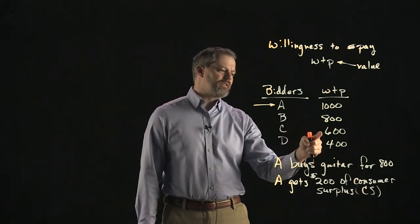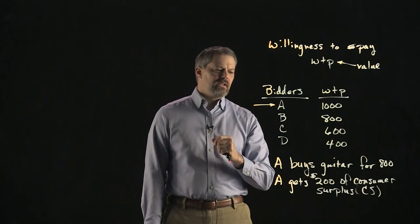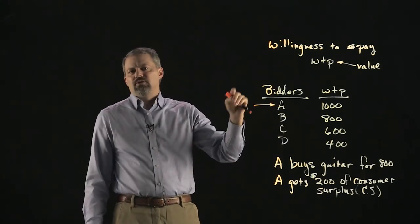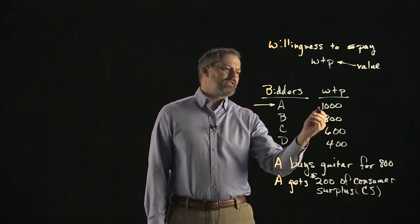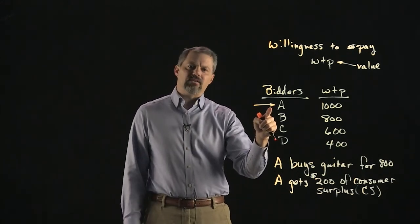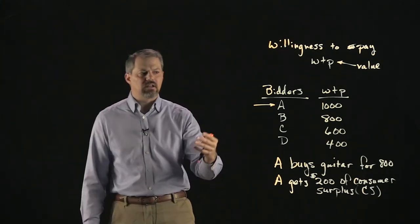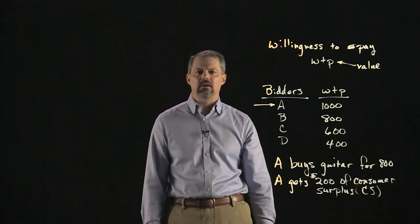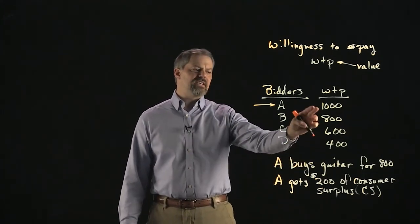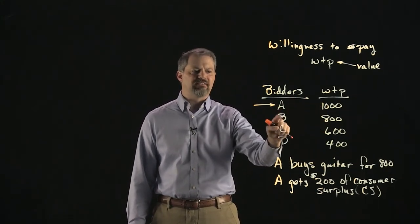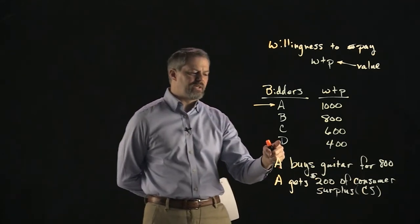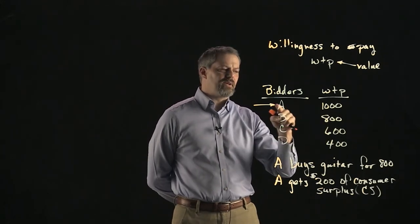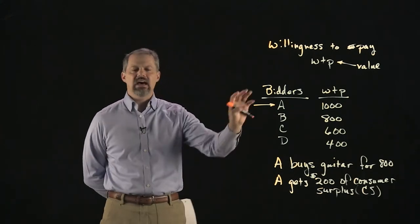These willingness-to-pay numbers don't necessarily tell us anything about income. It's tempting to think bidder A is just a rich person, but bidder A could be a kid who's been saving money from mowing lawns and is willing to pay $1,000, while bidder D could be someone wealthy who just doesn't value the guitar much. These numbers simply represent the value each person places on the item, not their income level.